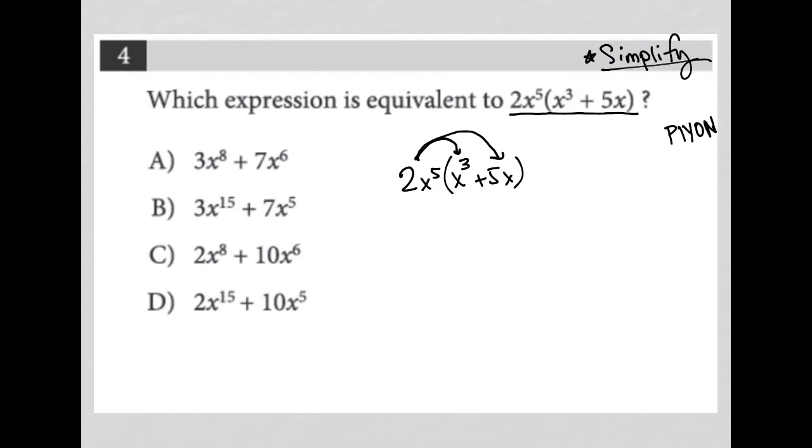So the first one is 2x to the fifth times x to the third. And that would be 2x to the eighth, so we just add the exponents. Secondly, I'm going to multiply 2x to the fifth times 5x. This is going to be a positive 10x to the sixth, again, because we just add exponents.